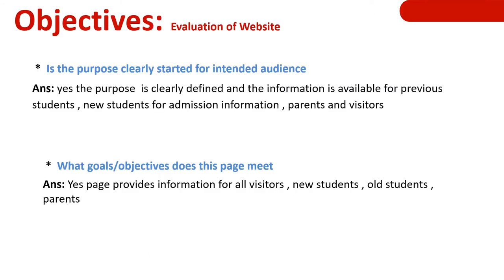Regarding the objectives of evaluation: is the purpose clearly stated for the intended audience? Yes — the purpose is clearly defined and information is available for previous students, new students, admission information, parents, and visitors. The website provides details for old students who want convocation or degree results to contact the university through the website.